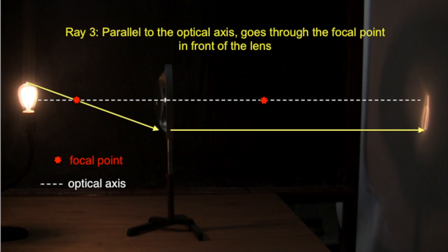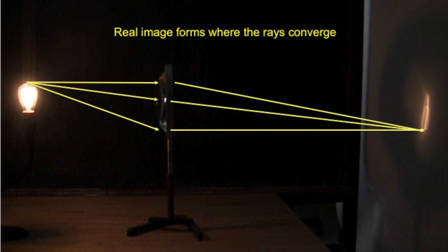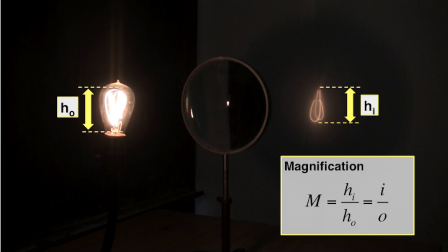The third ray goes through the focal point on the left side of the lens, and emerges parallel to the optical axis on the right. An inverted, real image forms where these rays converge. The magnification is the ratio of the image height HI to the object height HO, and is also equal to the image distance I over the object distance O.